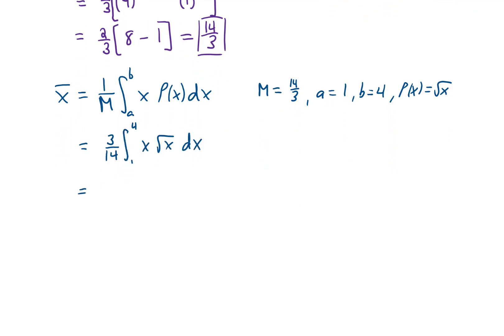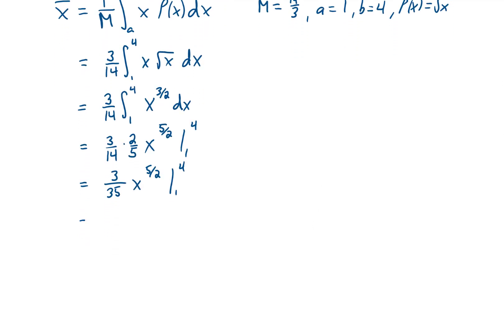Again, the square root of x is x to the one-half power. Multiplying x to the one-half power times x to the first power gives us x to the three-halves power. To integrate, we add 1 to that power, and we divide by that power. Doing a little bit of simplification with the fractions out in front, and plugging in our limits of integration should give us the answer.